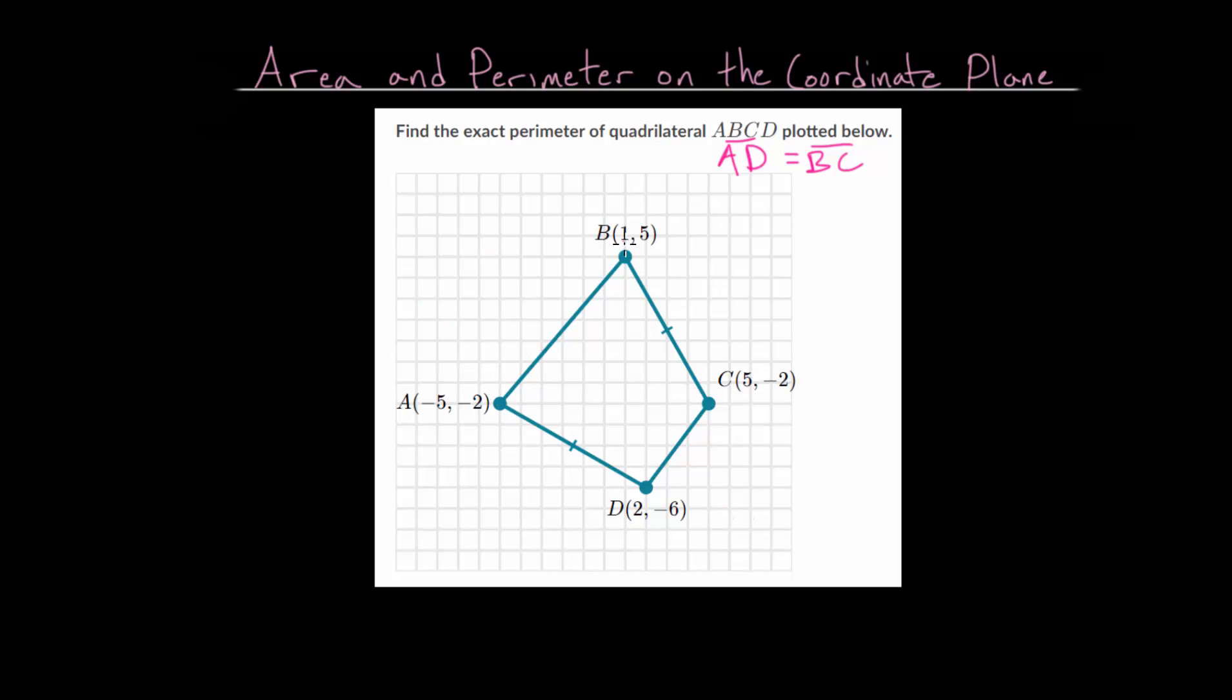If we want, we can use the distance formula, or we can just create triangles and then use the Pythagorean theorem. Either way you want to approach it will definitely work. The distance formula is definitely valid for finding the lengths of these lines. Personally, I prefer to just make triangles and use the Pythagorean theorem, since that's where the distance formula comes from anyways.